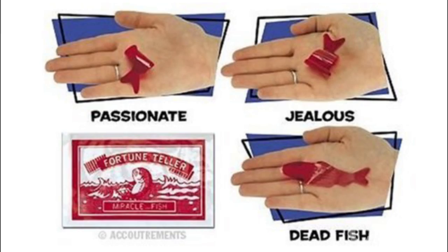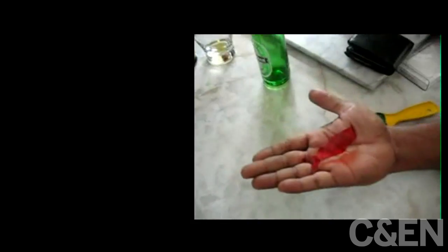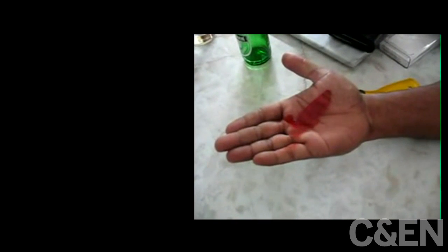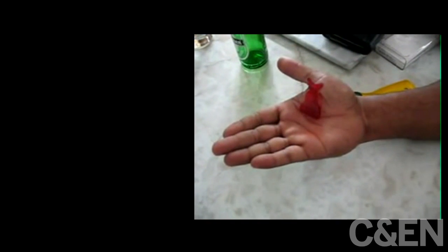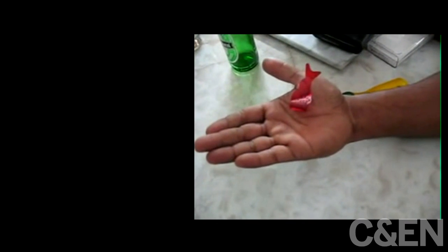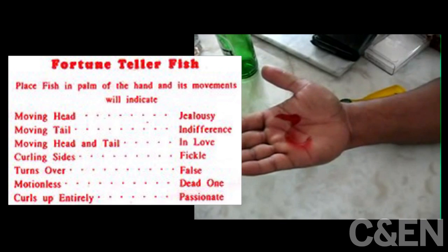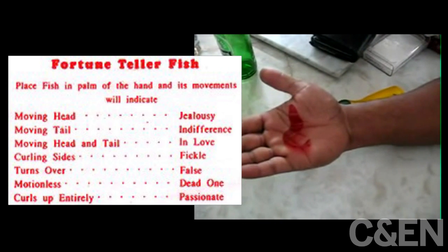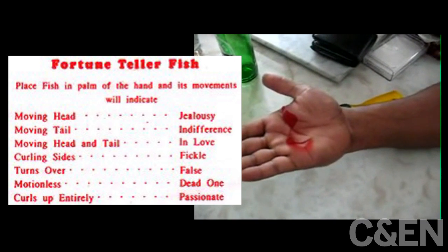Have you ever played with a fortune teller fish? They work in almost the same way, although manufacturers won't tell you that. These red sheets of plastic allegedly predict your personality by how they react when placed in your palm. Does the head curl up? You're jealous. Do the sides curl up? You're fickle.